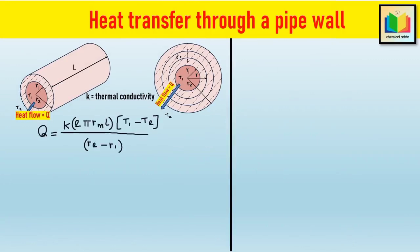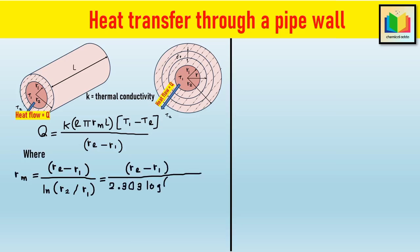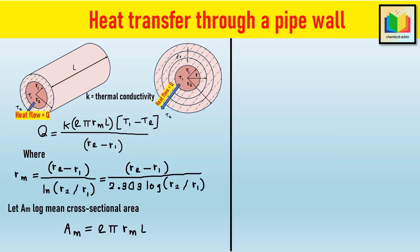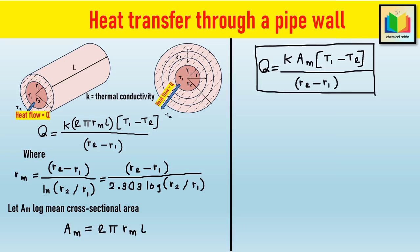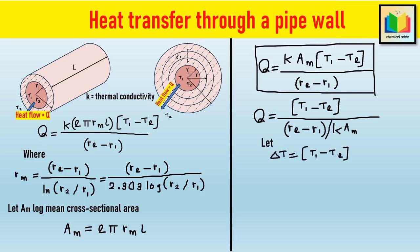This can also be written in terms of log mean cross-sectional area A_m, where A_m = 2π·r_m·L, giving: Q = k·A_m·(T1 − T2) / (r2 − r1). To express the equation in terms of ΔT (temperature difference) and R (thermal resistance offered by the cylindrical pipe wall), let ΔT = T1 − T2 and R = (r2 − r1) / (k·A_m). Hence the final equation becomes: Q = ΔT / R.